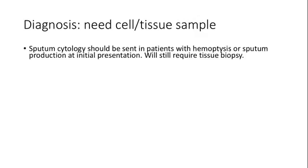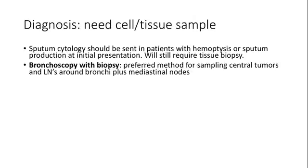How do we get a confirmed diagnosis? CT staging does not confirm the diagnosis — it must be confirmed with biopsy. For central masses, bronchoscopy is used — it's invasive but less so than surgery. Bronchoscopy can biopsy lymph nodes and masses around the bronchi and can access most mediastinal lymph nodes. Sputum cytology is possible if the patient has hemoptysis, but you won't likely need to differentiate when to use it versus a tissue biopsy.